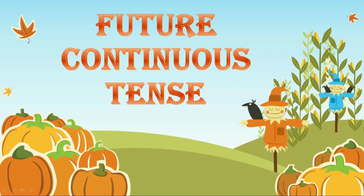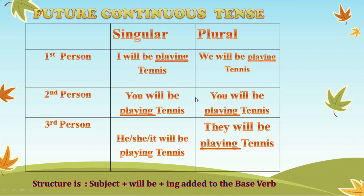Now let's move to future continuous tense. Future continuous tense is used to express an ongoing action which will occur at some time in the future. The structure is will be or shall be before the verb, with ing added to the base verb. So the formula is: subject plus will be plus verb-ing.